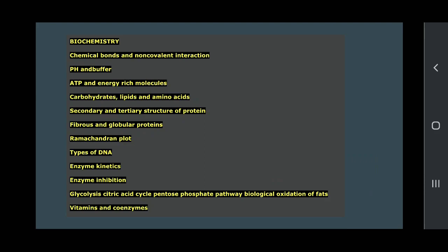Types of DNA, enzyme kinetics, enzyme inhibition, glycolysis, citric acid cycle, then pentose phosphate pathway and biological oxidation of fats, then we are having vitamins and coenzymes.